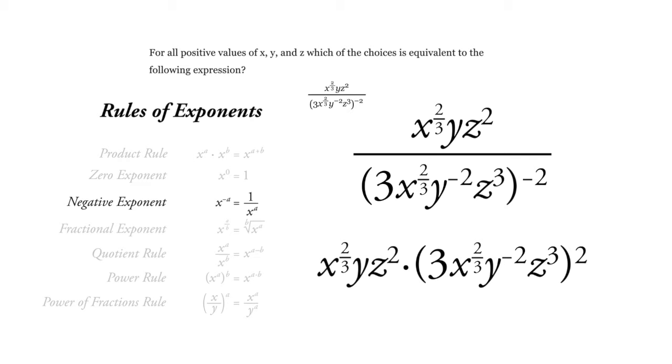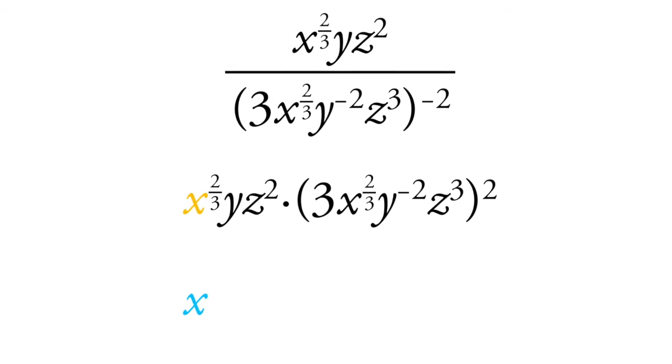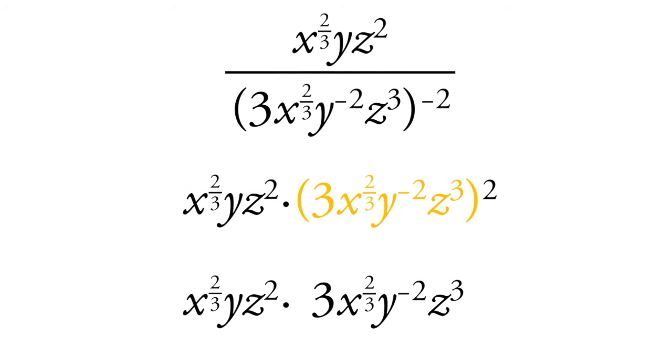And now we have something that's a little bit cleaner. We still have x to the 2 thirds y z squared, but now we can take this whole mess right in here and we can square it.